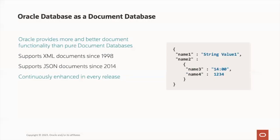Oracle has supported JSON in the database for many years. It was introduced in 12.102 in 2014, which was the same time as database in memory. Initially, JSON was stored as a CLOB or VARCHAR2 with a check constraint to enforce the JSON document syntax.